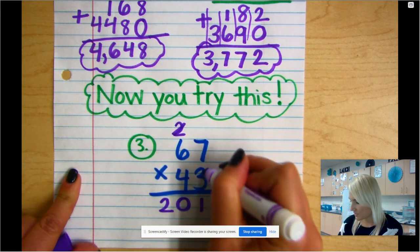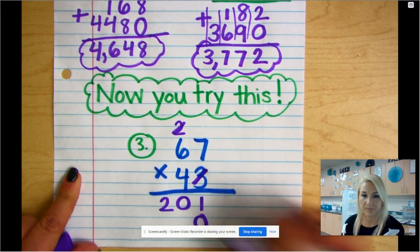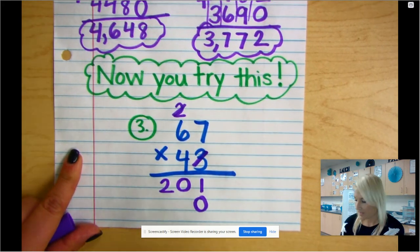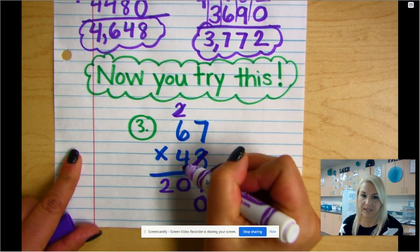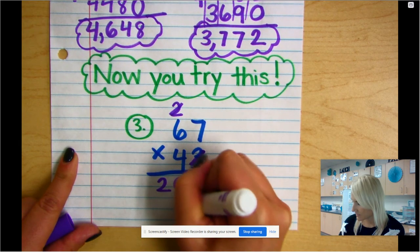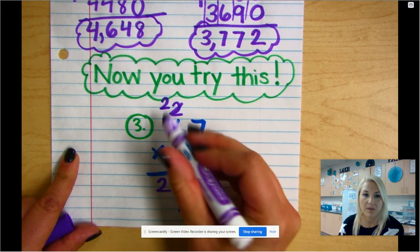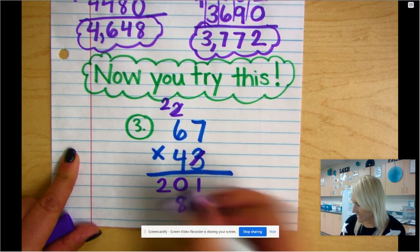I'm now done with those, and now I'm gonna drop a 0 to hold place value. Then I'm gonna start over here in the tens place, multiplying 4 times 7, which is 28, and 6 times 4, which is 24, plus 2, which gives me 26.